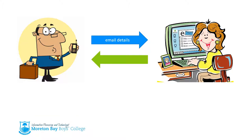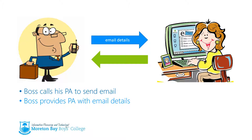The second type of module is the PA. The boss calls his PA and says, I need you to send an email out to my clients, and this is what I want you to say. The PA sends the email out. The boss provides the PA with email details, but no information is passed back to the boss — information passes from the main program into the module, but nothing is returned.